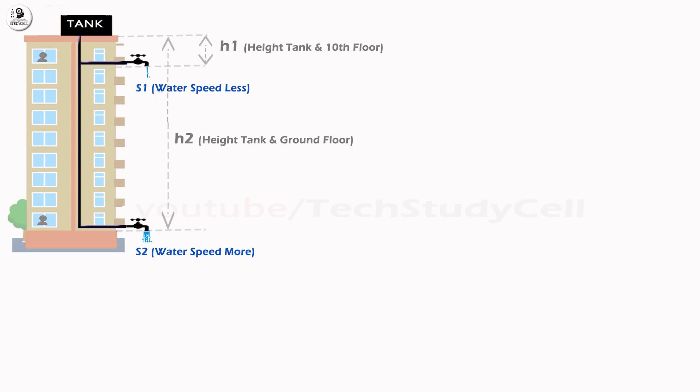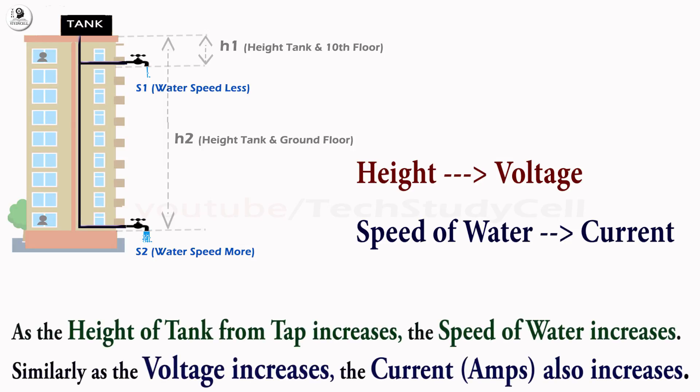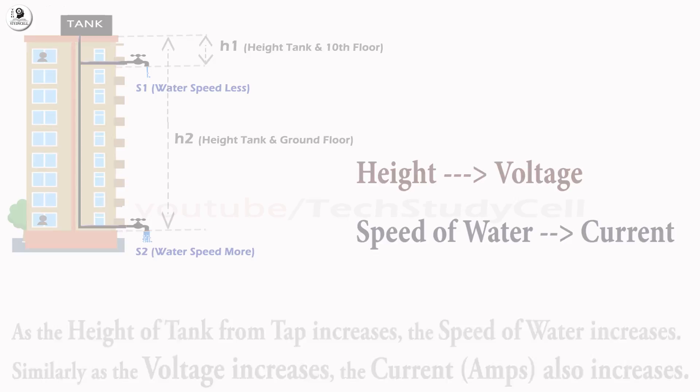Now, we can easily correlate the height between the overhead tank and the tap with voltage, and the speed of the water coming out from the tap with current. If I increase the height of the overhead tank, or voltage, the speed of the water flow, or current, will be increased respectively.